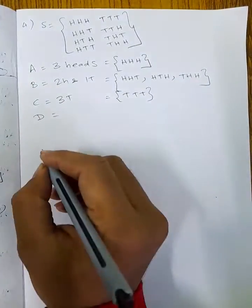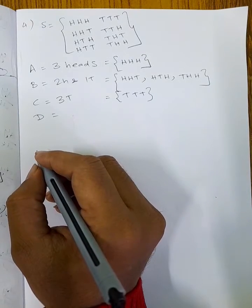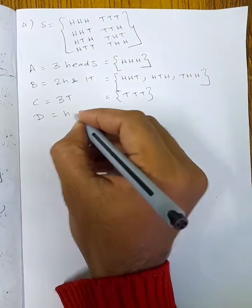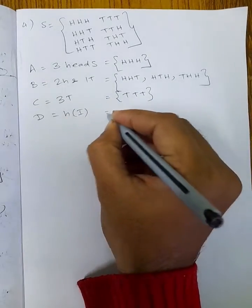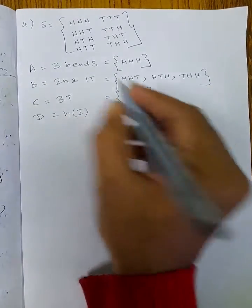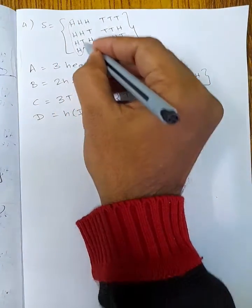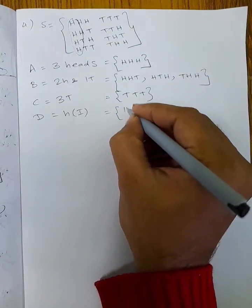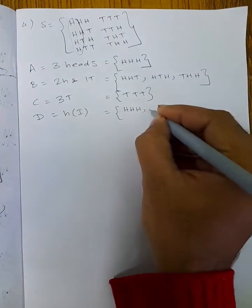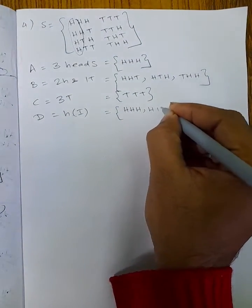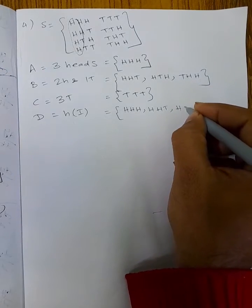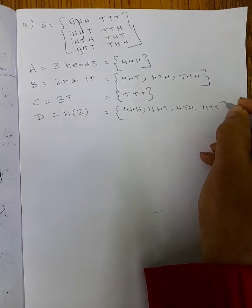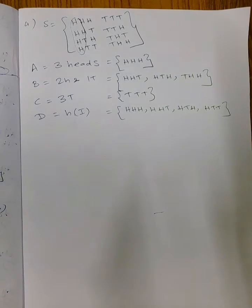Event D — head shows on the first coin: D = {(H,H,H), (H,H,T), (H,T,H), (H,T,T)}.